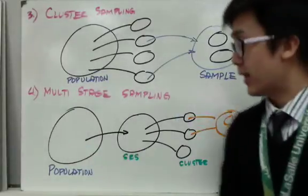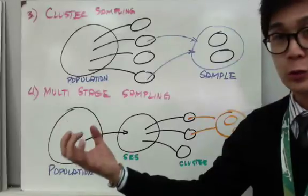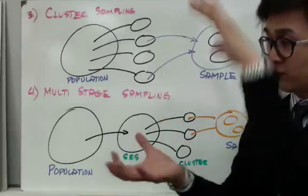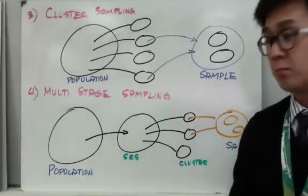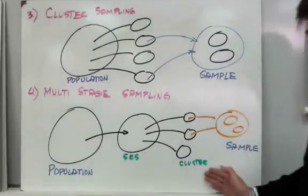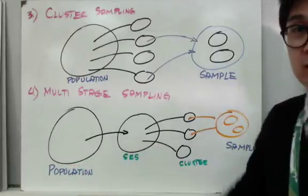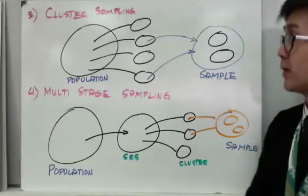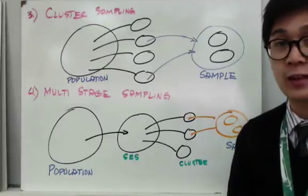Multi-stage sampling combines techniques. From the population, the first stage might use simple random sampling to pick a first group. Then from that group, you divide into subgroups and perform cluster sampling to pick the groups included in your sample. This is multi-stage sampling because you have different stages, each using a different sampling technique, to find the ultimate sample you want to use in your experiment. Those are the four types of sampling design you can use in designing a good experiment in statistics.